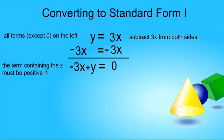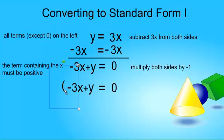Except, the term containing the x must be positive. I need to change all my signs. So, I'm going to multiply both sides of this equation by negative 1. I'm just going to put brackets around the left-hand side, and then multiply both sides by negative 1.